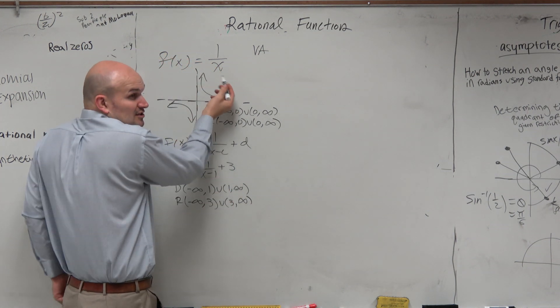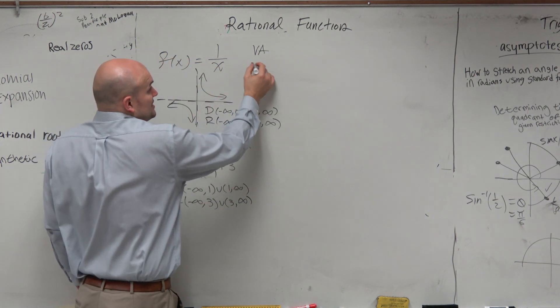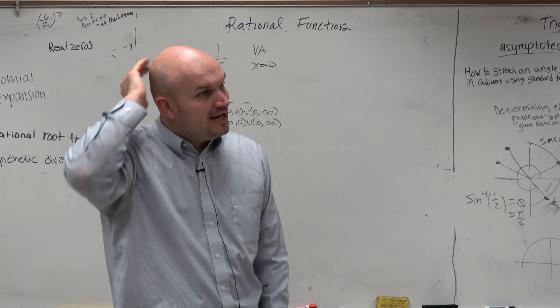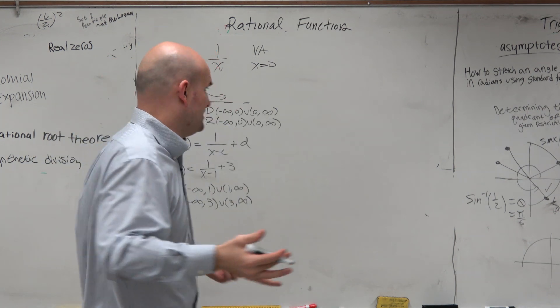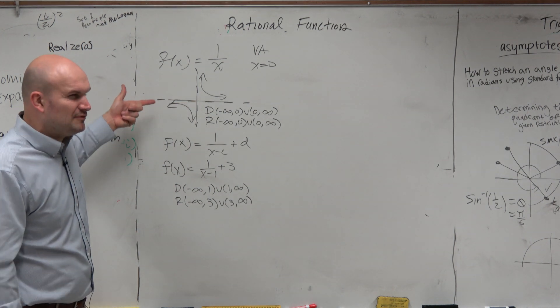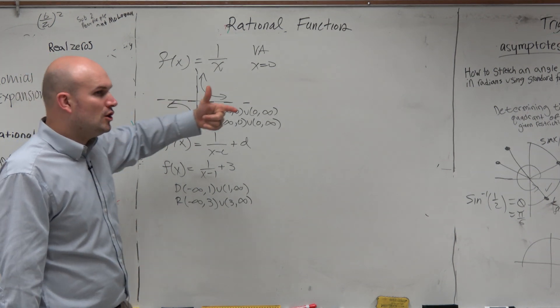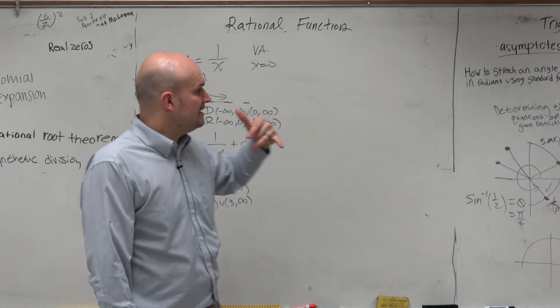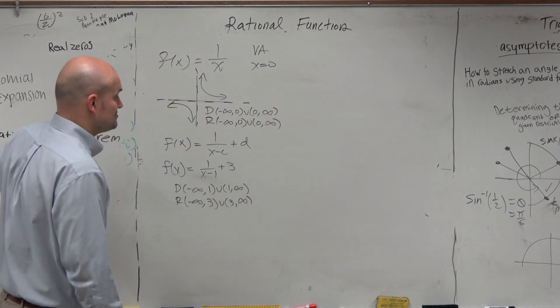Vertical asymptotes occur when the denominator is equal to 0, right? And this one's pretty obvious. I mean, when is the denominator equal to 0? 0, right? Now, the horizontal asymptotes, we're given this graph. We can identify them. But how do we know that for sure? And if you recall, that comes from the horizontal asymptote test.